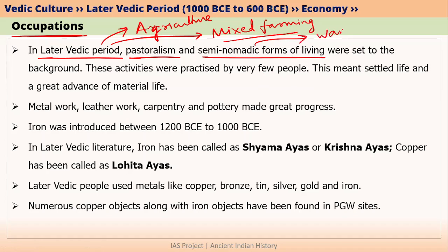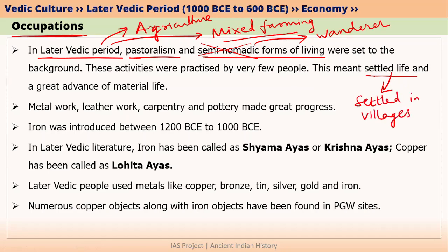The word 'nomad' means wanderer. Since later Vedic people were not semi-nomads, they led a settled life. Settled life simply means they settled in villages and carried on agriculture nearby. Since most people led a settled life, some people were still practicing pastoralism and semi-nomadic forms of living, but these were very few compared to those living in villages.